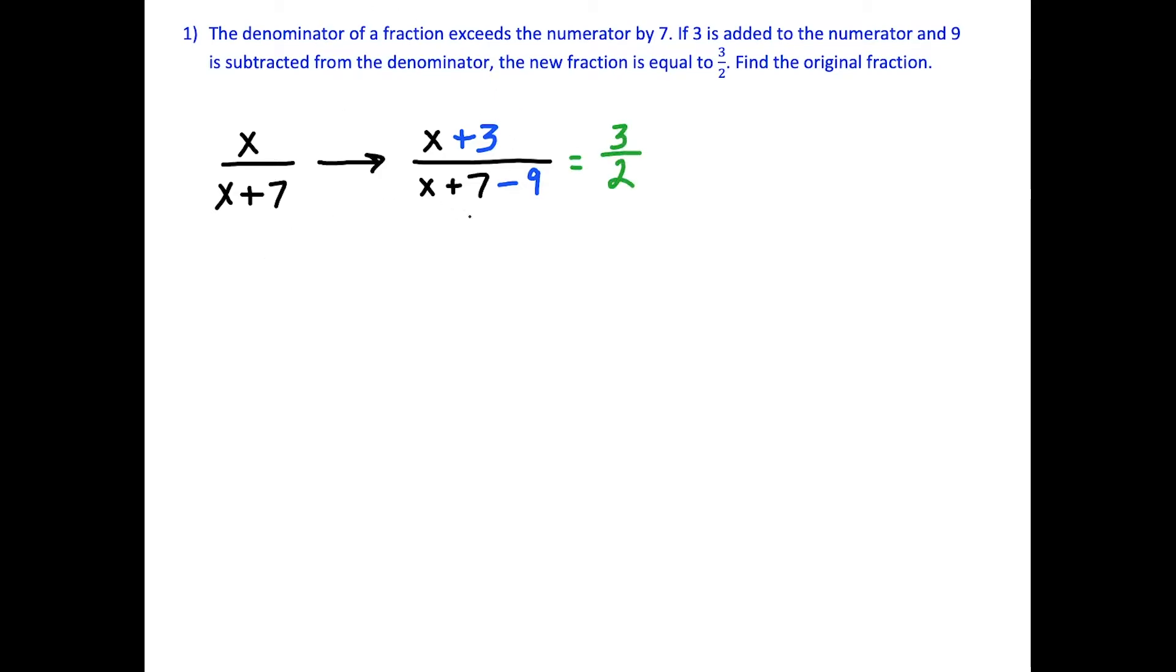So then all we have to do here is simplify this fraction here on the left, and then solve the equation. So we have x plus 3 over x plus 7 minus 9 is going to simplify to x minus 2, because we're just doing 7 minus 9 is negative 2. And this equals 3 halves.